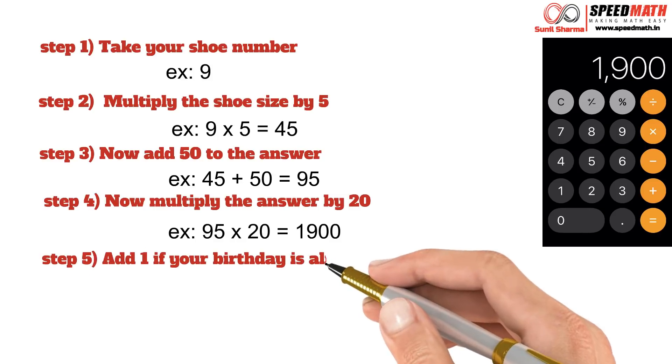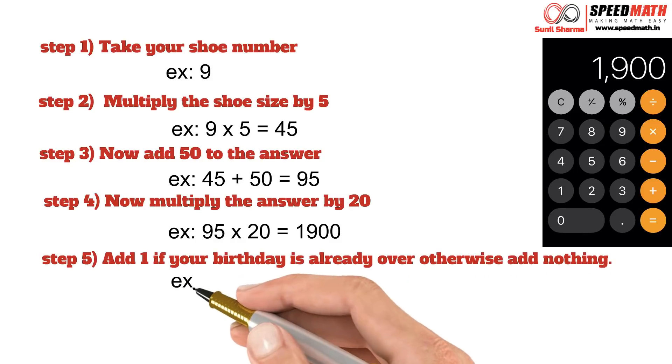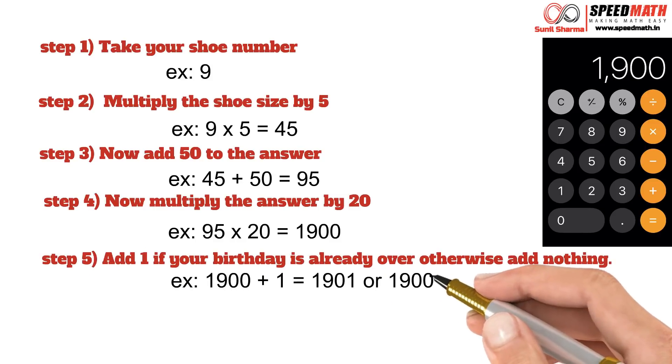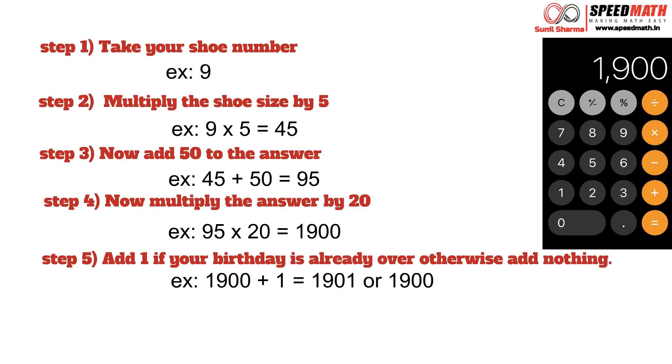Step 5 is very interesting. You need to add 1 in your calculator if your birthday is already over. If your birthday is yet to come, please don't add anything. So in case my birthday is already over, I'll add 1 to 1900 that will give me 1901.